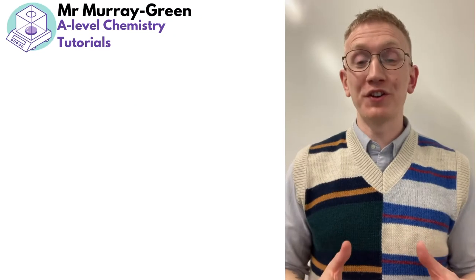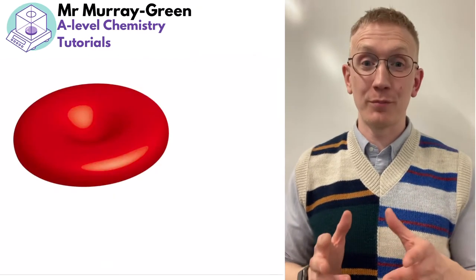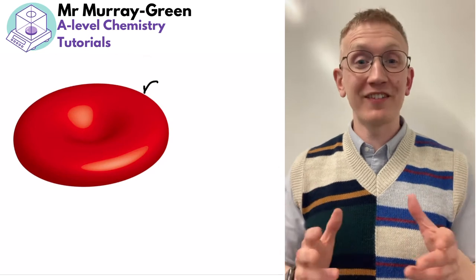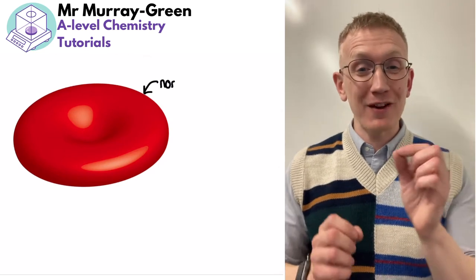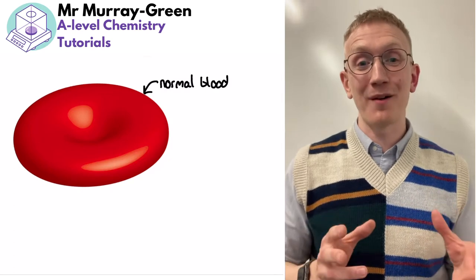Your blood has a very delicate pH balance of 7.35 to 7.45, and one of the buffer systems used to maintain this very narrow pH range is the carbonic acid and hydrogen carbonate buffer system.